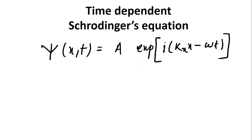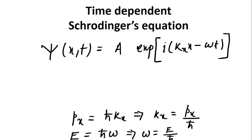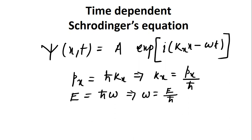In this equation, if we substitute k_x in terms of momentum and ω in terms of energy: as we know, p = ℏk, and writing only in the x direction, p_x = ℏk_x, so k_x = p_x/ℏ. Similarly, energy E = ℏω, so ω = E/ℏ.